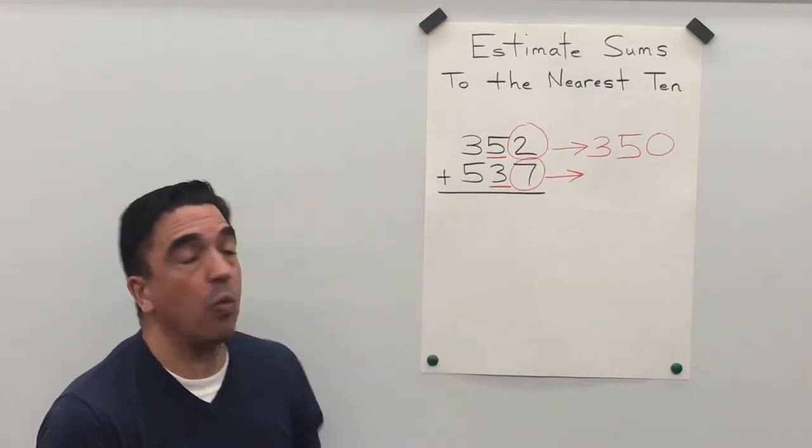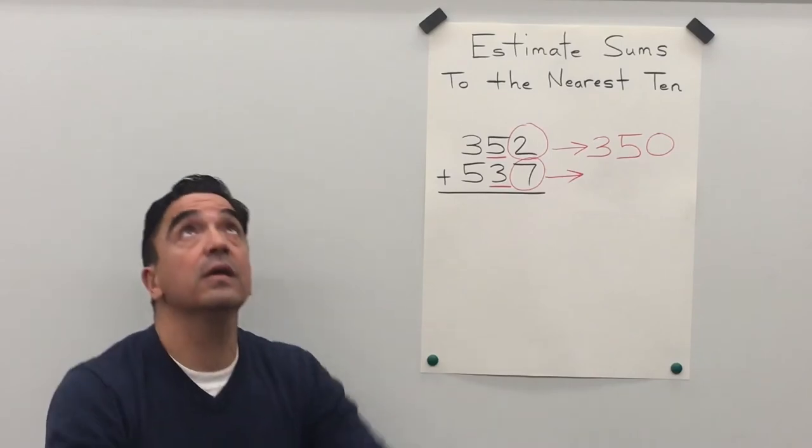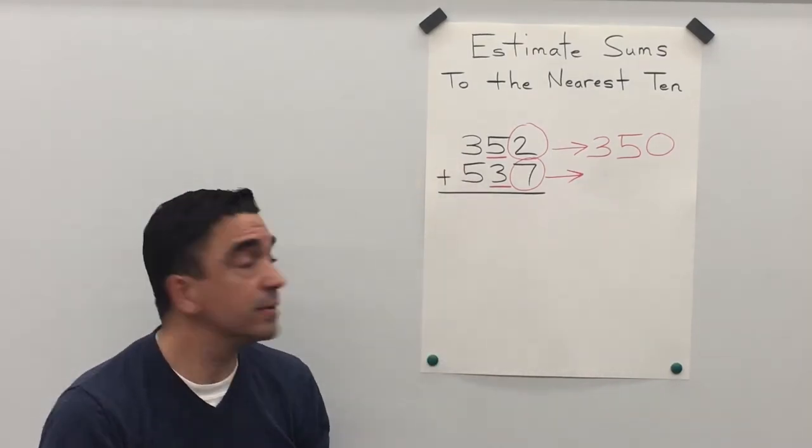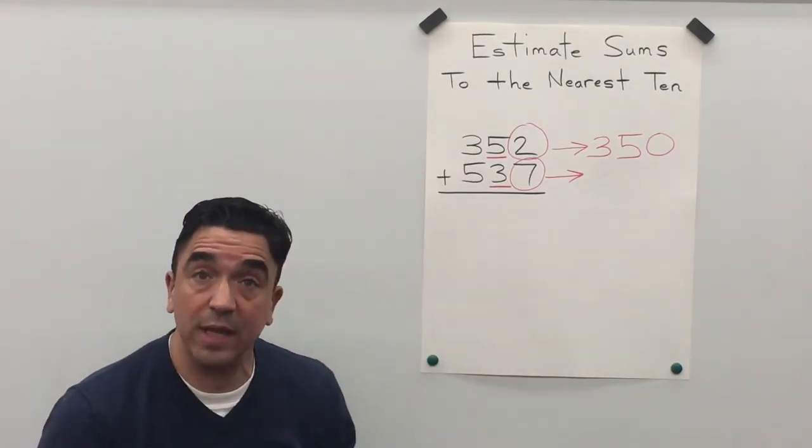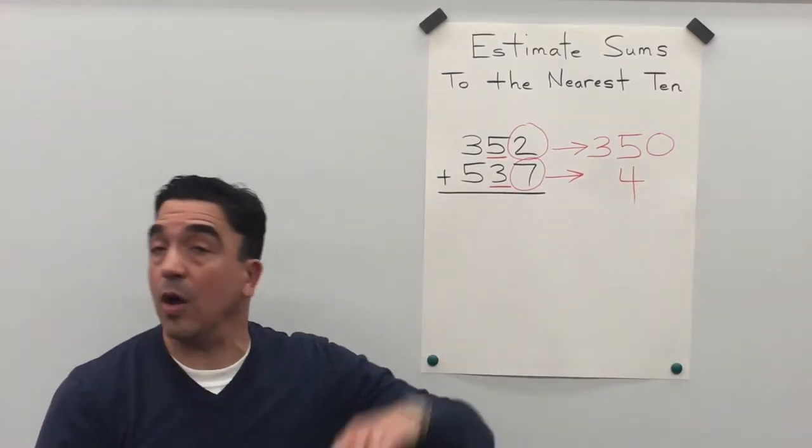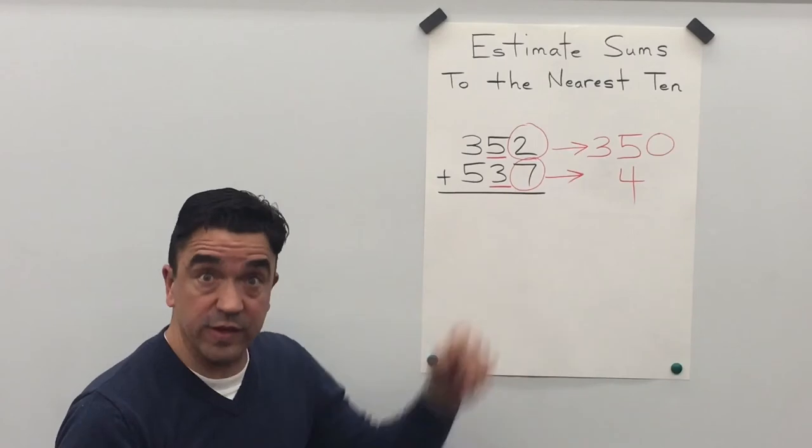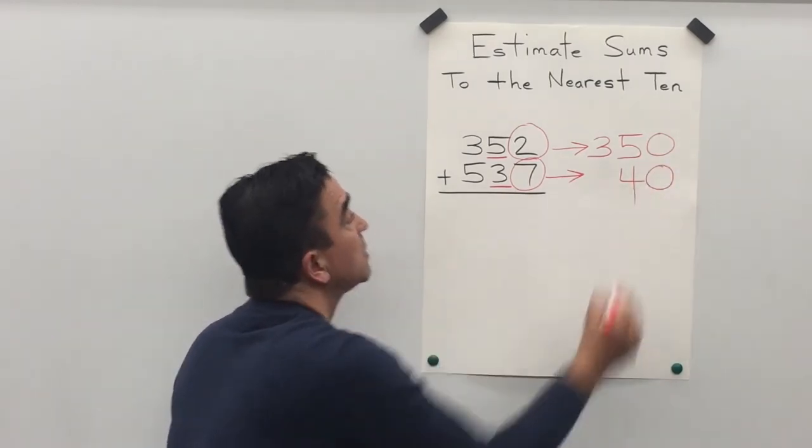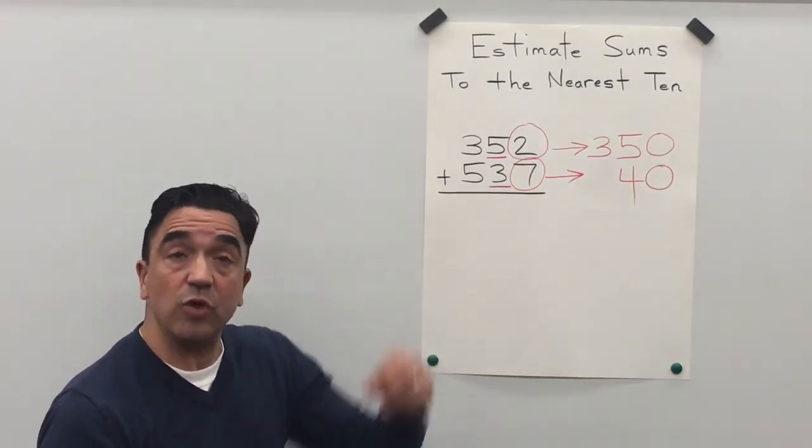The seven in the ones place is going to tell the three to go up. So it becomes a four. All the digits after, the one digit, becomes a zero. Now we're going to just drop the five.